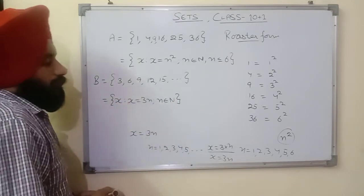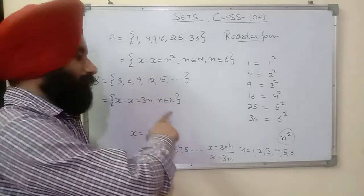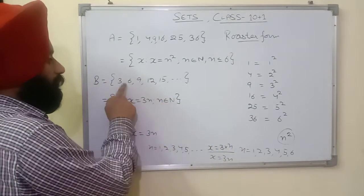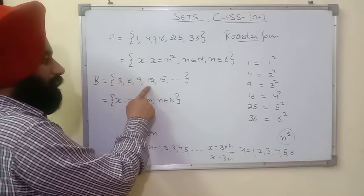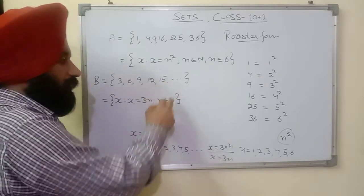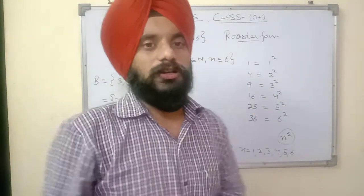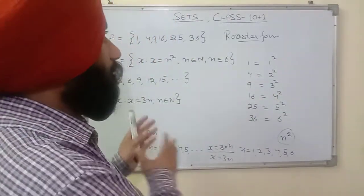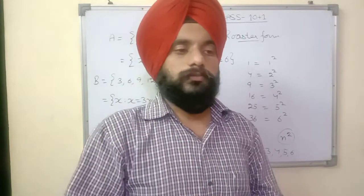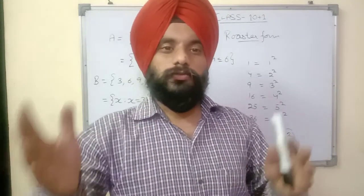The set builder form is B = {x | x = 3n, n ∈ ℕ}. For every natural number n, we get an element: n=1 gives 3, n=2 gives 6, n=3 gives 9, n=4 gives 12, n=5 gives 15, n=6 gives 18, n=7 gives 21, and it continues. This is how we convert roster form to set builder form.